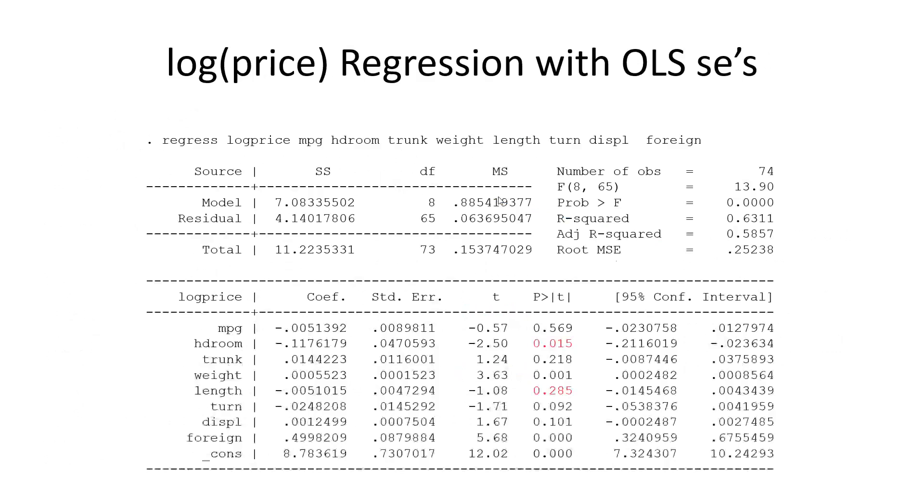So let's see what happens if we use the log price, the variance stabilizing transformation, and we get surprisingly very similar results. Before we had 1%, I think, and now we have 1.5%. Then here we had 16%, we have 28%. So very similar results. Of course, the coefficients are completely different.